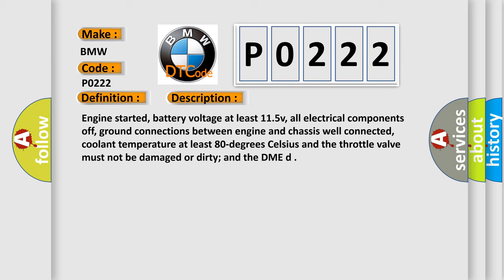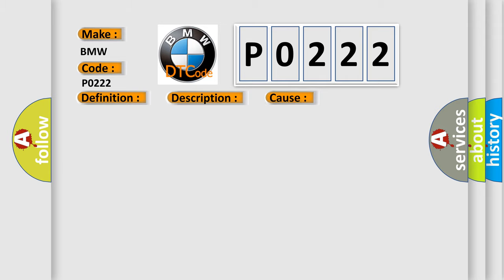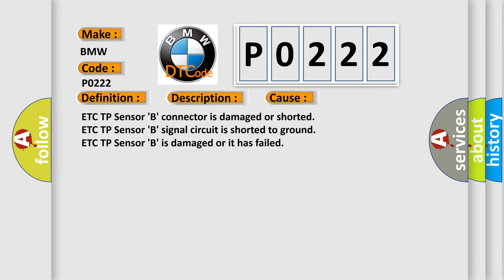Here is a short description of this DTC code. Conditions include: engine started, battery voltage at least 11.5 V, all electrical components off, ground connections between engine and chassis well connected, coolant temperature at least 80 degrees Celsius, the throttle valve must not be damaged or dirty, and the DME active. This diagnostic error occurs most often in these cases: the TP sensor B connector is damaged or shorted.